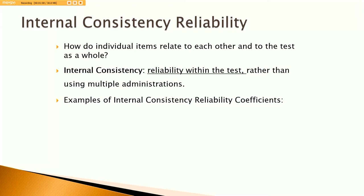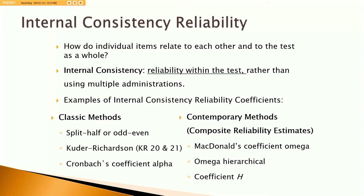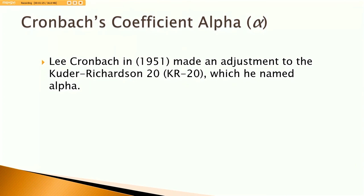Some examples of reliability coefficients or internal consistency reliability coefficients are listed here. And again, in this video, I'm going to focus on Cronbach's coefficient alpha and McDonald's coefficient omega. But there are a number of other options as well.